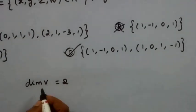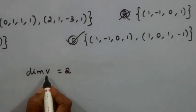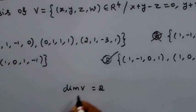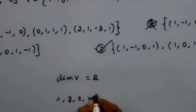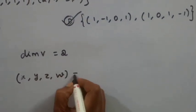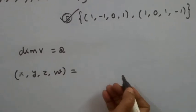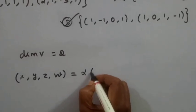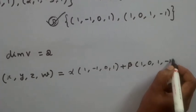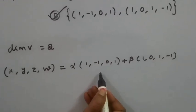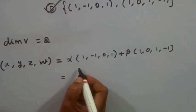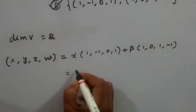Now let's verify option D is correct. We take a general linear combination of the two basis vectors. This gives alpha times (1, -1, 0, 1) plus beta times (0, 1, 1, -1). We expand: alpha vector gives (alpha, -alpha, 0, alpha) and beta vector gives (beta, 0, beta, -beta).